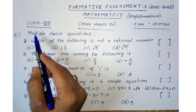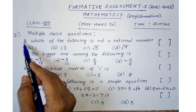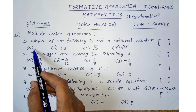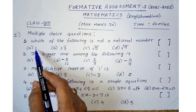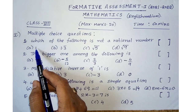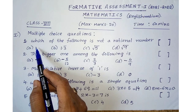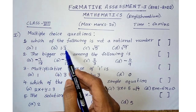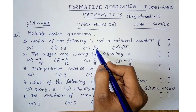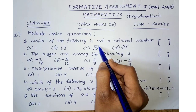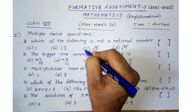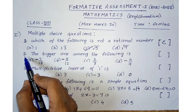Row 1, multiple choice questions. First one: which of the following is not a rational number? We need to identify which is not a rational number. Option 1 is one, which is a rational number — we can write it as 1/1. Next, 1.3 bar is also a rational number. But root 5 — since 5 is a prime number, its square root is irrational. So the answer is option C.